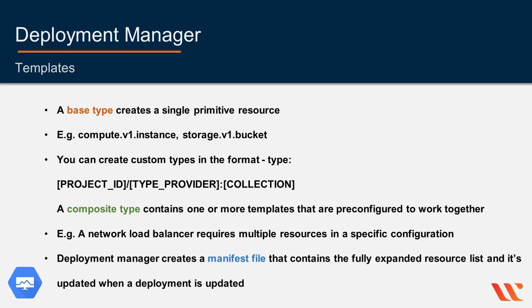A composite type contains one or more templates that are pre-configured to work together. These templates expand to a set of base types when deployed. For example, you can create a composite type that deploys a network load-balanced managed instance group.